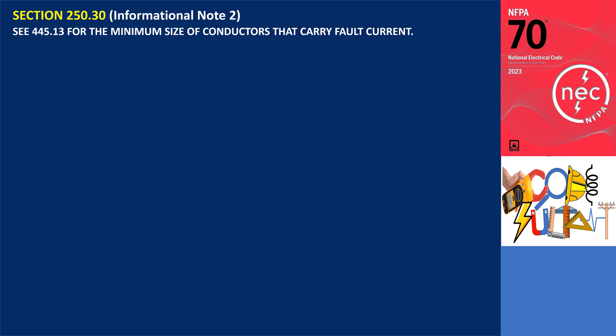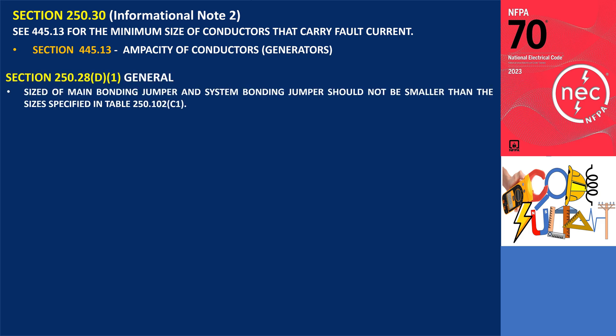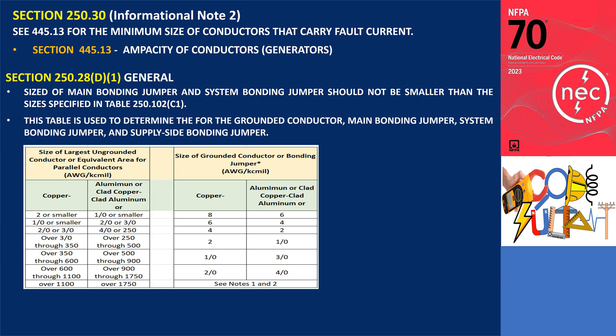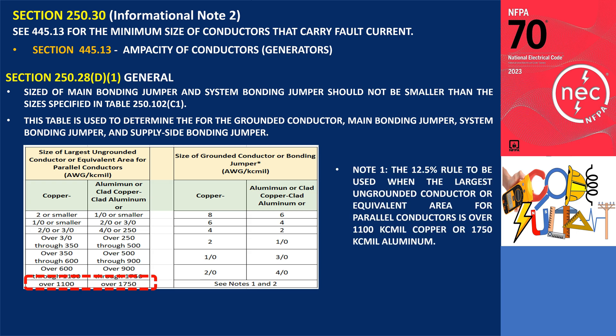For the second informational note, the minimum size of conductors that carry fault current is specified in section 445.13, which is the section about the ampacity of conductors for generators. The size of the system bonding jumper should be based on the requirements in table 250.102 to determine the minimum size. Additionally, the neutral conductor must have a minimum size equal to 12.5 percent of the cross-sectional area of the largest phase conductor, as discussed in 250.28.